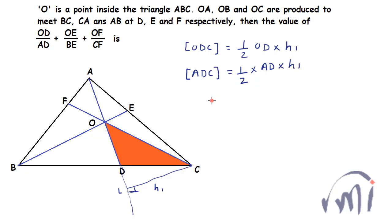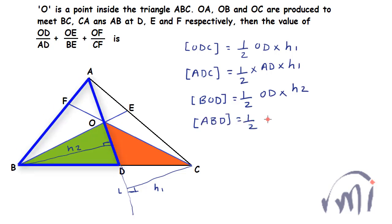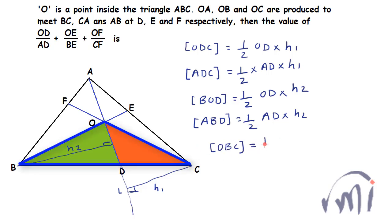Now if I talk about the area of triangle BOD, that area will be equal to half multiplied by OD multiplied by the height of this triangle. To find the height I draw a perpendicular to line AD — let's assume this height is H2. Then the area of triangle BOD will be half times OD times H2, and the area of triangle ABD will be equal to half multiplied by AD multiplied by H2. From here you can say the area of triangle OBC will be equal to the sum of the areas of these two triangles.